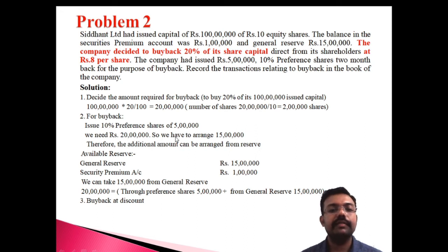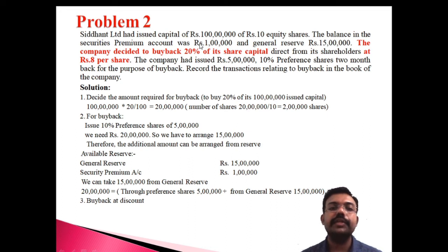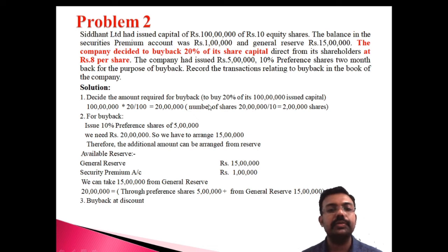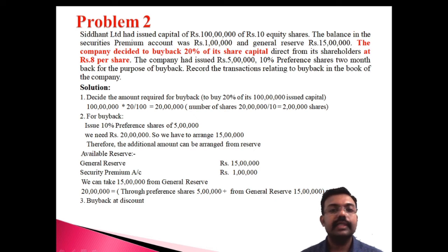We need to arrange 20 lakh total. From the preference share issue we get 5 lakh. The additional amount is taken from reserves — general reserve 15 lakh and security premium 1 lakh. We utilize 15 lakh from general reserve. So: 5 lakh through preference shares plus 15 lakh through general reserve = 20 lakh arranged.